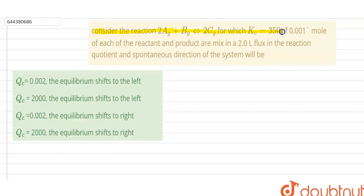Here the equilibrium constant is given. If 0.001 mole of each of the reactant and product are mixed in 2 liter flux, the reaction quotient and spontaneous direction will be what?